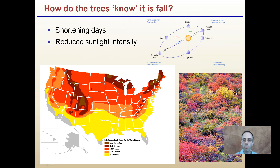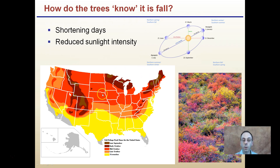How do the trees know that it's fall time? It seems like every tree in a region knows it's fall time. There are a couple of key factors: one is the shortening days and reduced sunlight intensity, and temperature is also decreasing. Plants can sense these indicators — it's fall time, winter's coming — and prepare to go dormant so they can survive through the harsh winter and come back in the springtime. This has to do with the position of the northern or southern hemisphere in relation to the sun, the tilt of the earth, and how it rotates and revolves around the sun. This is how we can develop maps of peak foliage times to determine when might be the best time to see fall colors in different parts of the United States.